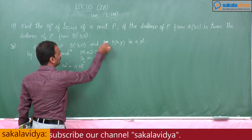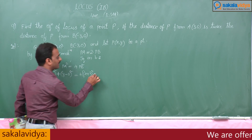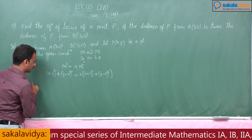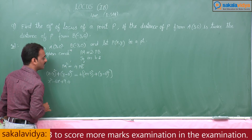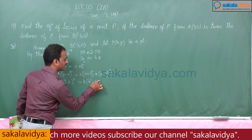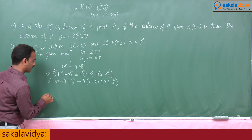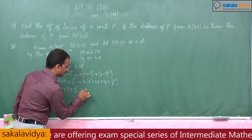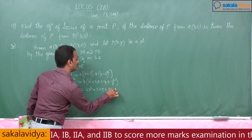The distance between P and B: P is (x, y) and B is (−3, 0), so (x + 3)² plus y² . Expanding the left side: x² − 6x + 9 + y² equals 4 into (x + 3)² plus y².